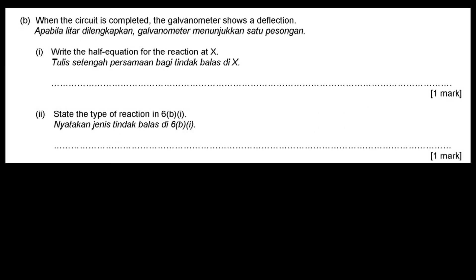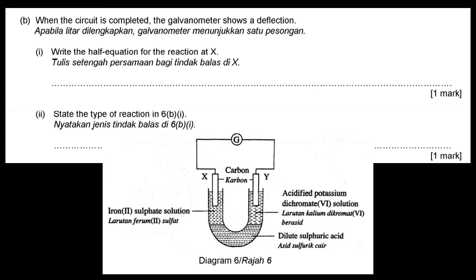When the circuit is completed, the galvanometer shows a deflection. For the half equation for the reaction at X — X is immersed in iron(II) sulfate solution — the half equation for iron(II) ion is: Fe²⁺ → Fe³⁺ + e⁻. This half equation is read as: iron(II) ion releases 1 electron to form iron(III) ion.